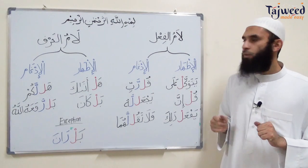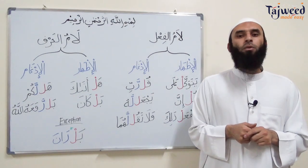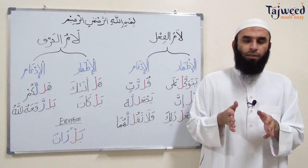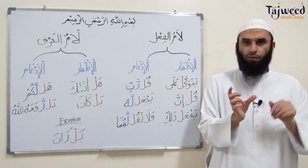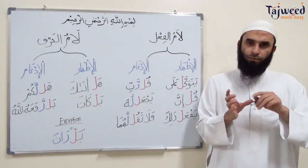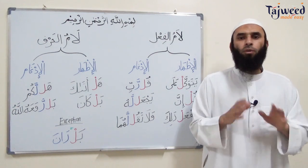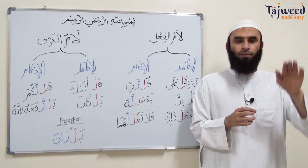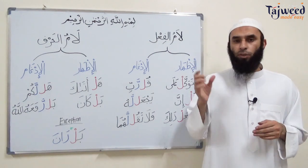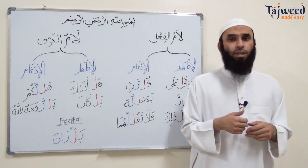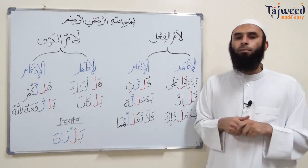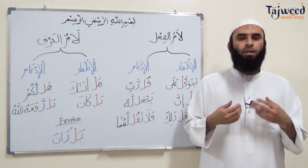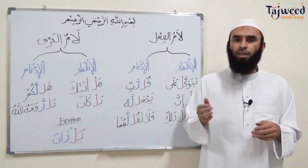Today we covered أحكام اللام الساكنة - the rules of اللام الساكنة. We found that لام can come in nouns (لام التعريف): 14 letters pronounce the لام clearly and 14 letters it is not pronounced. It can come in verbs (لام الفعل): pronounced clearly with all letters except لام and را. And in participles (هل and بل): similarly pronounced clearly except before لام and را where it merges. In sha'Allah, in the next lesson we will start the مدود - the stretching of letters. جزاكم الله خيراً والسلام عليكم ورحمة الله وبركاته.